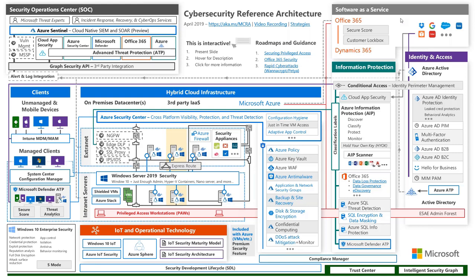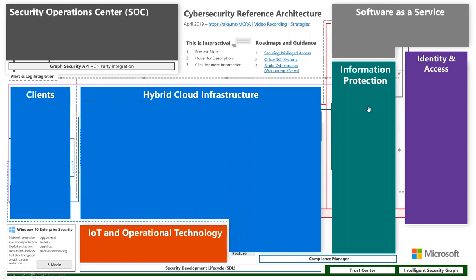Here's the reference architecture in some high-level buckets we can digest. We've got software as a service — Office 365, Dynamics, third-party services like Dropbox. We've got identity and access where we'll find things like Azure AD and conditional access. We can think about information protection — that's where Azure Information Protection lives. The reality is there are lots of integrations here; these things work together.